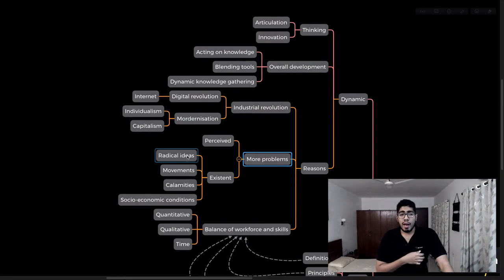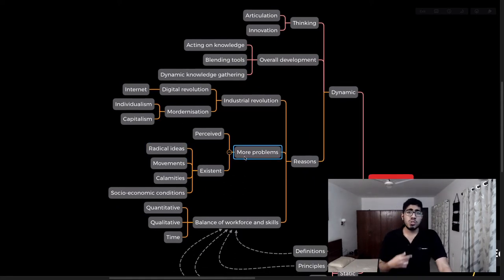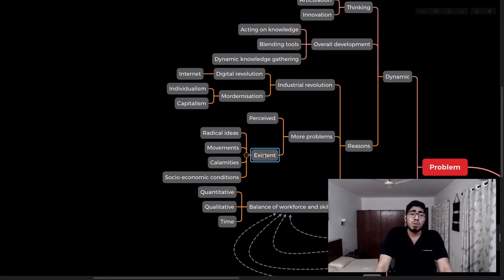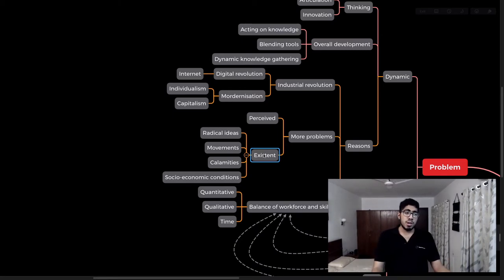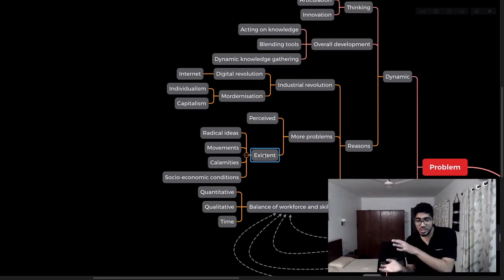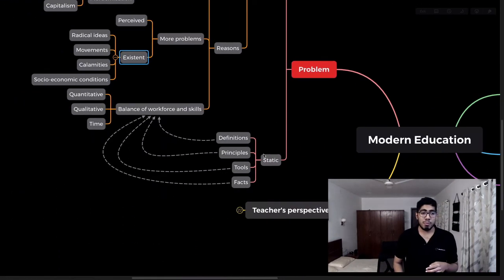There are more problems arising as a result of modern education — radical ideas, lots of movements, more economic calamities, and imbalances in social-economic conditions. When globalization becomes a problem, when one problem leads to another, you need to figure out how to bring things into balance and how to face situations that have tremendously complex consequences and structures.